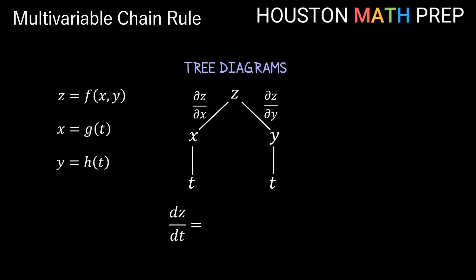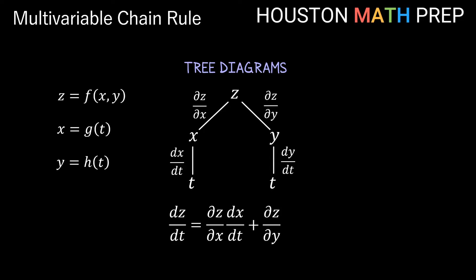Any time there's a fork in our tree where we can go more than one direction — that is, a variable is a function of more than one other variable — that will be a partial derivative. Since we can go from z to either x or y, both derivatives of z with respect to x and y will be partial derivatives. When going from x or y to t, there's only one path, so those derivatives of x and y with respect to t are ordinary derivatives. Each term comes from one path: the left path gives ∂z/∂x times dx/dt; the right path gives ∂z/∂y times dy/dt.